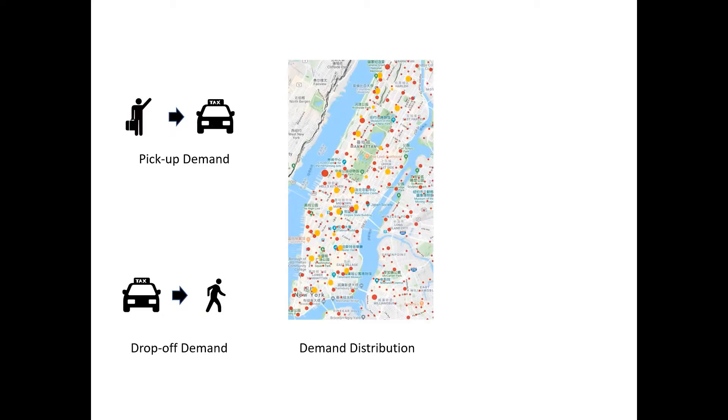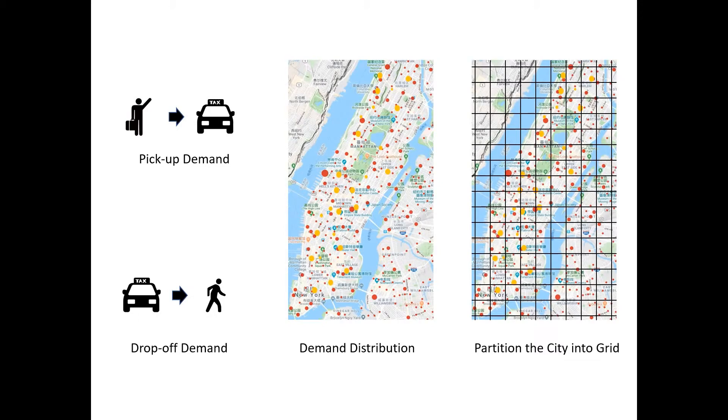We collect all demand in the city and predict the demand in the future. If the demand distribution is irregular and disorderly, it is hard to work directly on it. The common solution is that we partition the city into some small grids and calculate the demand separately.